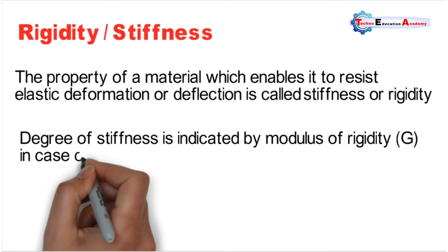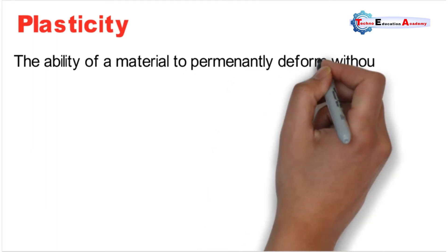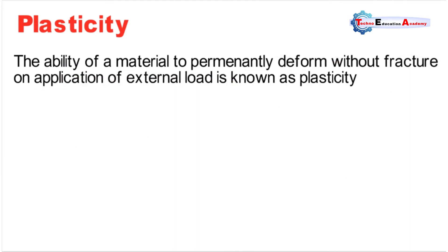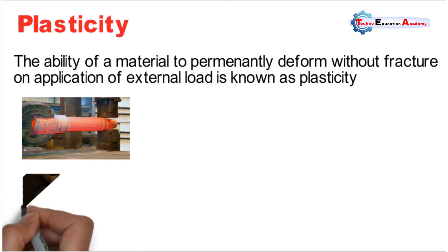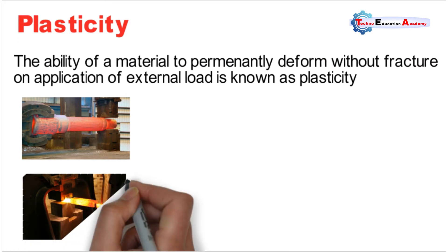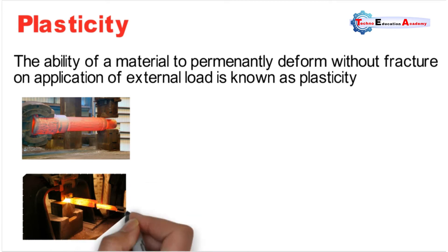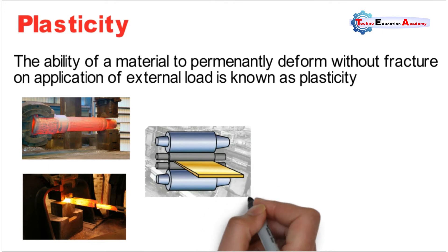The next property is plasticity. Plasticity is the ability of a material to permanently deform without fracture on application of extended load. Plastic deformation will take place only after the elastic limit has been exceeded. In elasticity, after removal of force the material regains its original shape and size, but in the case of a plastic material some permanent deformation remains after removal of the load. This property is important for processes such as forging, rolling, drawing, etc.